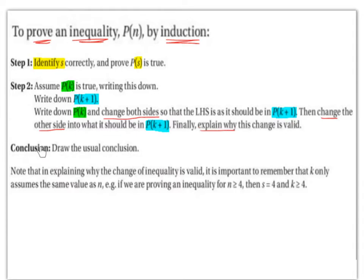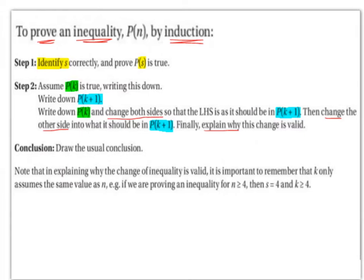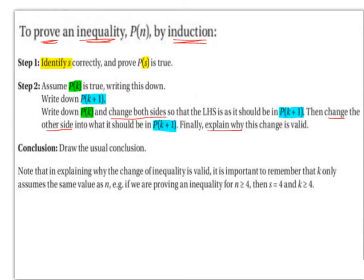Conclusion — draw the usual conclusion. Note that in explaining why the change of inequality is valid, it is important to remember that k only assumes the same values as n. For example, if we are proving an inequality for n ≥ 4, then s = 4 and k ≥ 4.